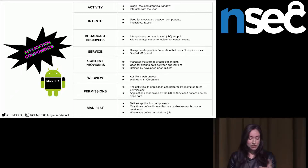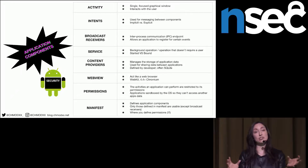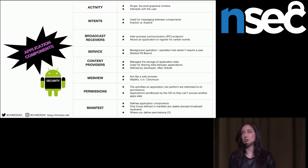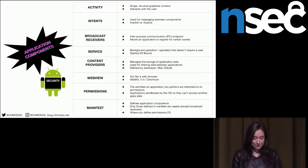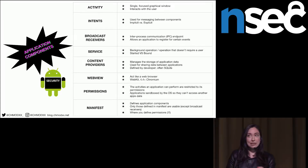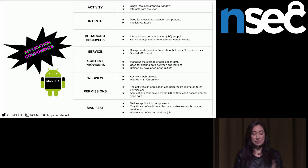The activities an application can perform are restricted to its permissions, and applications are sandboxed within the OS so they can't access other applications' data. Permissions are really important — if you have an application taking banking information, you don't want malware accessing those credentials. The manifest file is an XML document that tells you everything about the application: where you define permissions and application components. If you don't define something in the manifest, except for broadcast receivers created at runtime, it doesn't do anything.